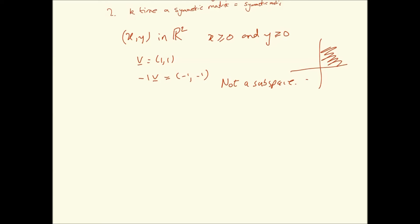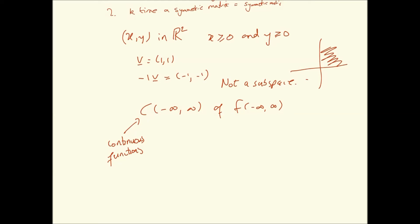We have also talked about C(−∞, +∞) — the space of continuous functions — as a subspace of F, the space of all functions. When you add two continuous functions, you get a continuous function, and multiplying a continuous function by a scalar does not change its continuity property. Therefore, it is a valid subspace of F(−∞, +∞).